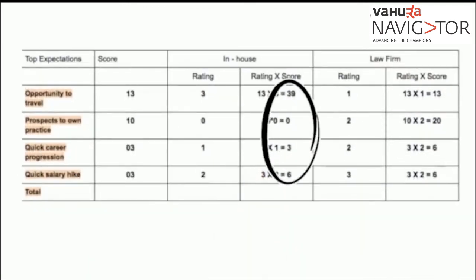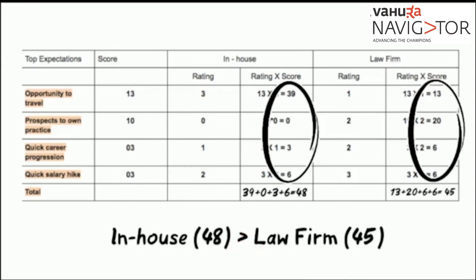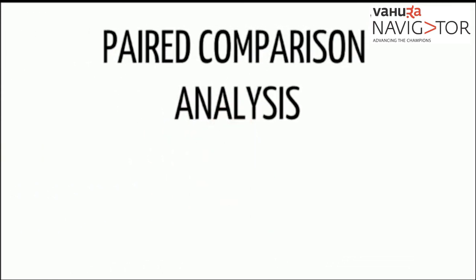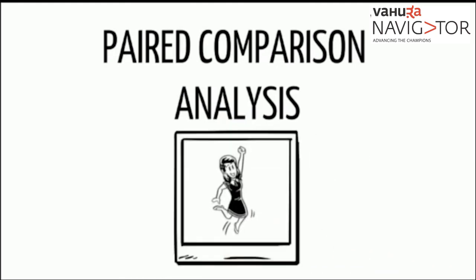Once calculated, Reshma has to tally the scores achieved by each career option and identify the one that scored the most. In this case, in-house scores a total of 48 and law firm a total of 45, making the in-house legal team a better option for Reshma. Thus, by using the paired comparison analysis, we are able to effectively compare two confusing choices and arrive at a certain and decisive answer.